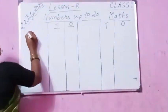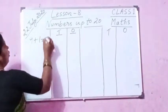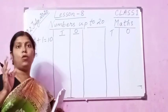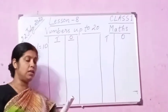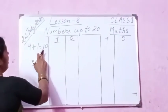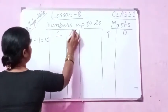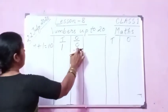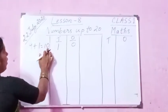9 plus 1 is 10. You have to keep in mind that 9 plus 1 equals 10. Now what does 10 actually mean? 10 means 0 ones and 1 ten. So you can say 1 ten and 0 ones, whichever way. So 1 ten plus 0 ones — you write 0 in the ones place and 1 in the tens place. So in 10 you have 0 ones and 1 ten.